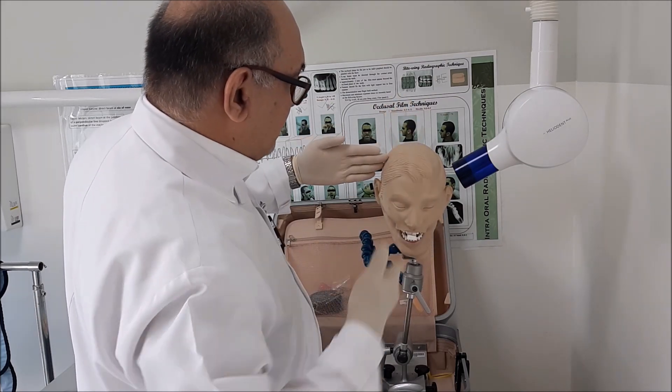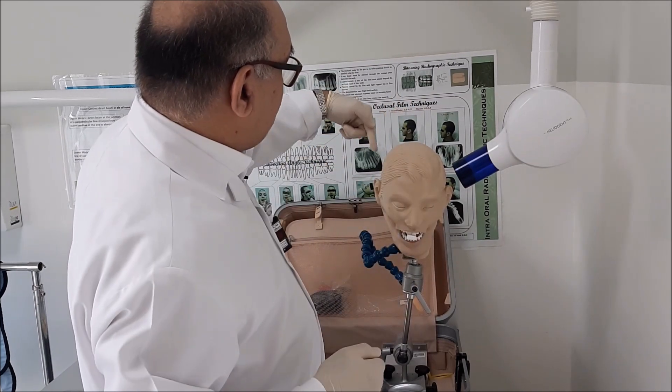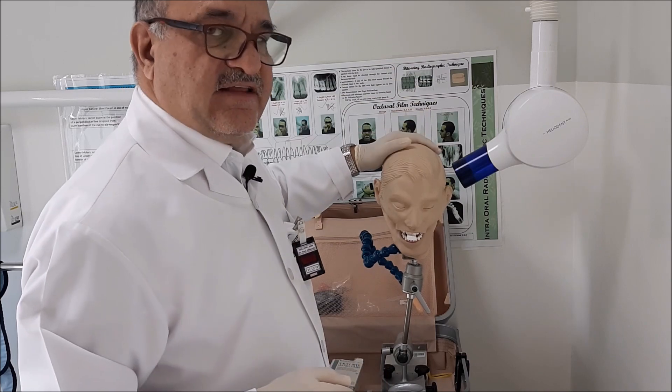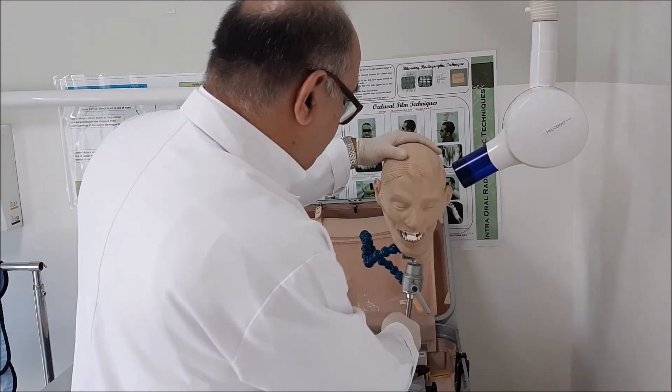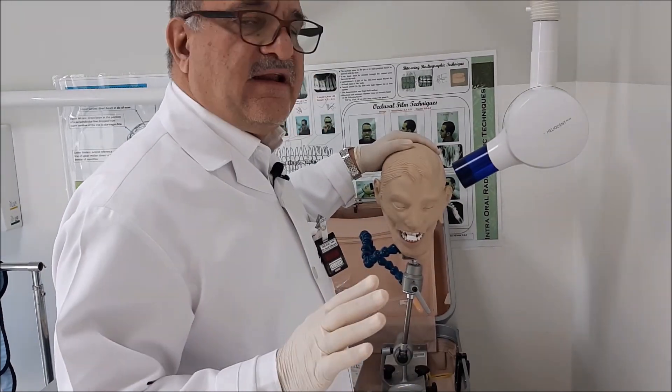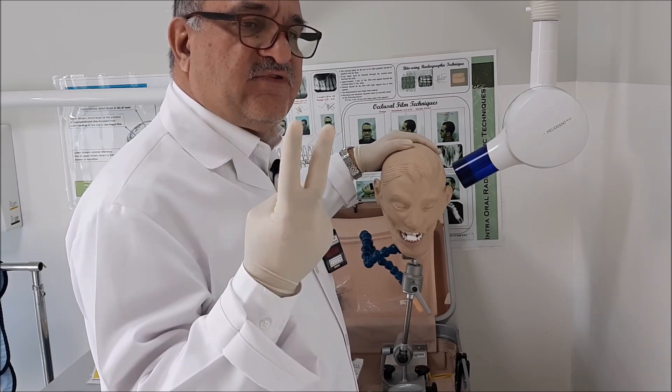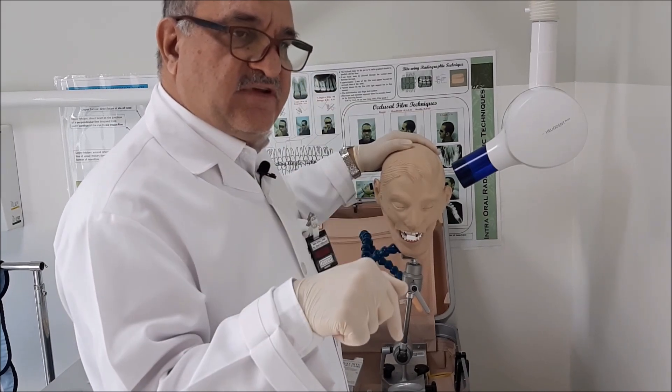So, 90 degrees to the beam, you stand behind it, either on this side or on this side. This is if you're doing the upper central incisors or the lower central incisors, both positions - upper central, lower central.